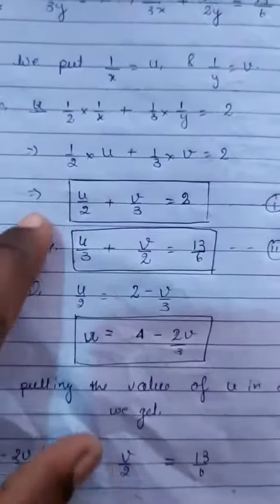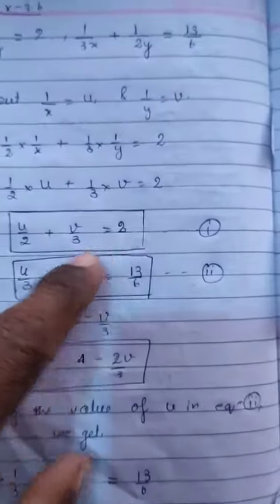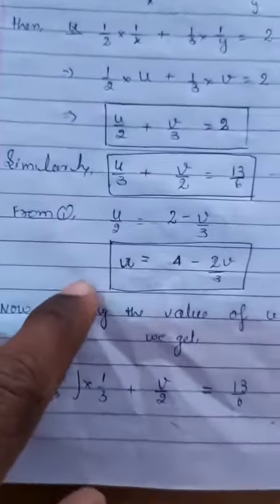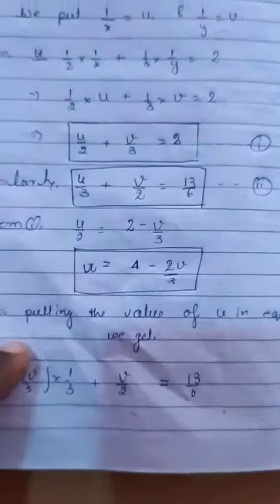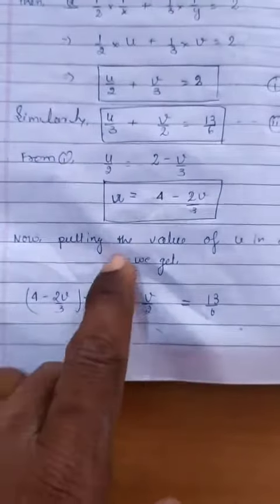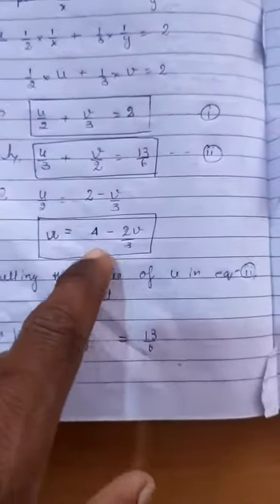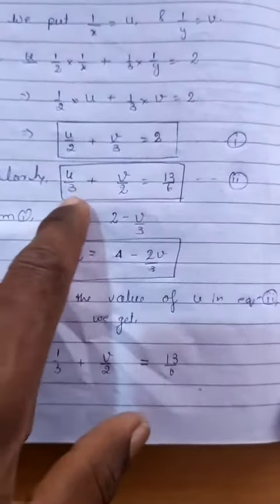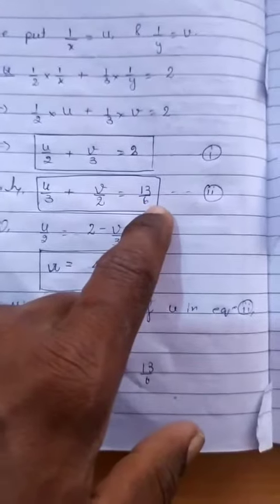So then the equation becomes u upon 2 plus v upon 3 equal to 2. Similarly, the second can be done. Thus, the equation has been transformed in these two forms: that is u upon 2 plus v upon 3 equal to 2, and u upon 3 plus v upon 2 equal to 13 upon 6.